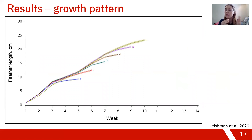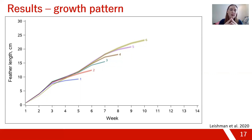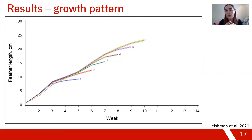Looking at the growth pattern — how feather length changes over time — with weeks on the x-axis and feather length on the y-axis: for the first six primaries, which all appear at the same time, the slope is typically highest soon after emergence. As feathers approach their final length, growth tapers off to a plateau before molting. So it is not a linear relationship — growth rate is rapid early and then slowly tapers off.